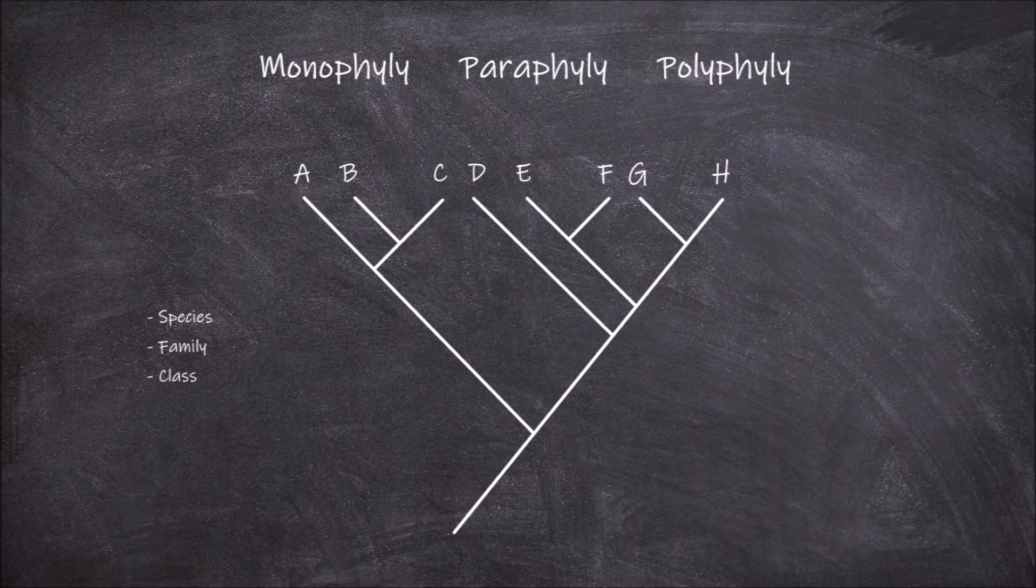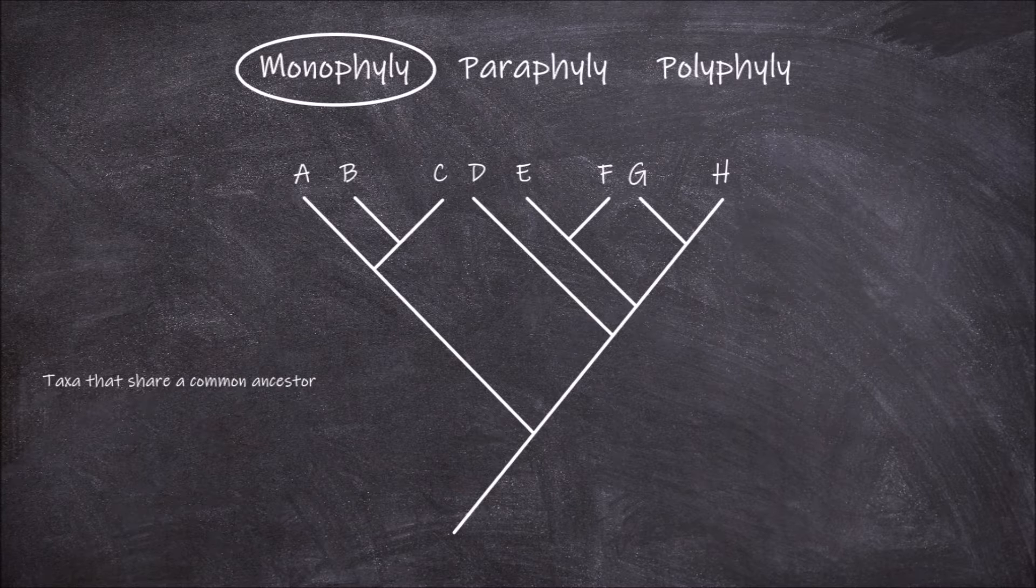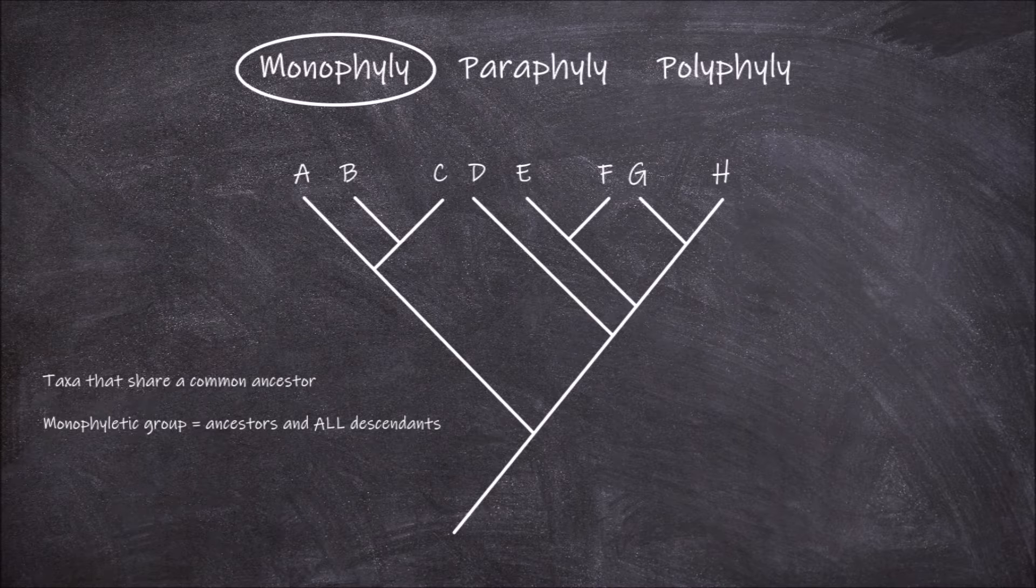Monophyly, paraphyly, and polyphyly all refer to a type of relationship between taxa on a phylogenetic tree. Monophyly refers to a group of taxa that share a common ancestor. The monophyletic group is this ancestor and all of its descendants.